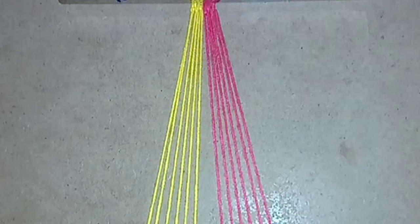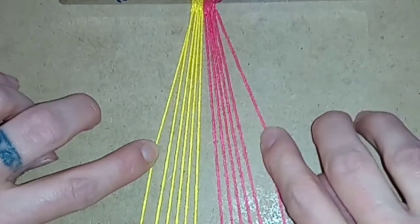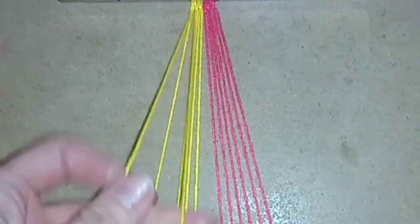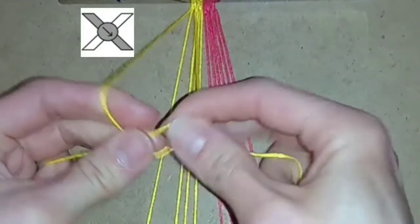For row 2 and every subsequent even numbered row you want to ignore the first and last threads. Beginning with thread 2 and 3, do forward knots. You want to do forward knots for the whole row.